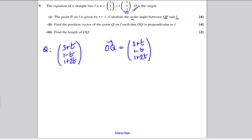Well, if OQ is perpendicular to L, then the direction vector OQ dotted with the direction of the line L must be equal to 0, because vectors are perpendicular if and only if their direction components are 0. So (3+T, 1-T, 1+2T), if we take the dot product of this with the direction vector of our straight line L, (1, -1, 2), I must get the answer 0 because they're perpendicular. Let's times this out. This times 1 is simply 3+T, this times -1 becomes T-1, and this times 2 becomes 2+4T, and all of that would be 0.